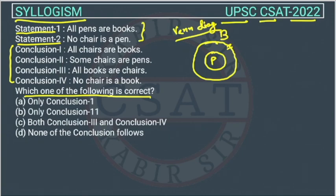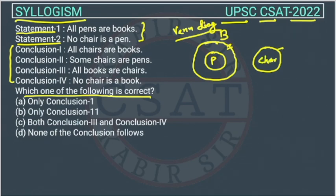The second statement is: no chair is a pen. So the chair circle is outside the pen circle. There are two possibilities — the chair circle may overlap with the books circle, or it may not touch books at all. Both possibilities exist.